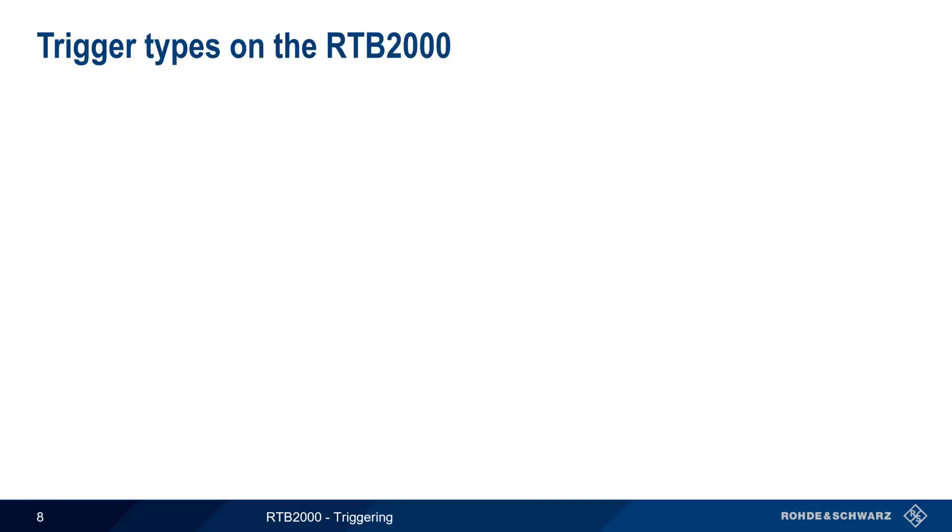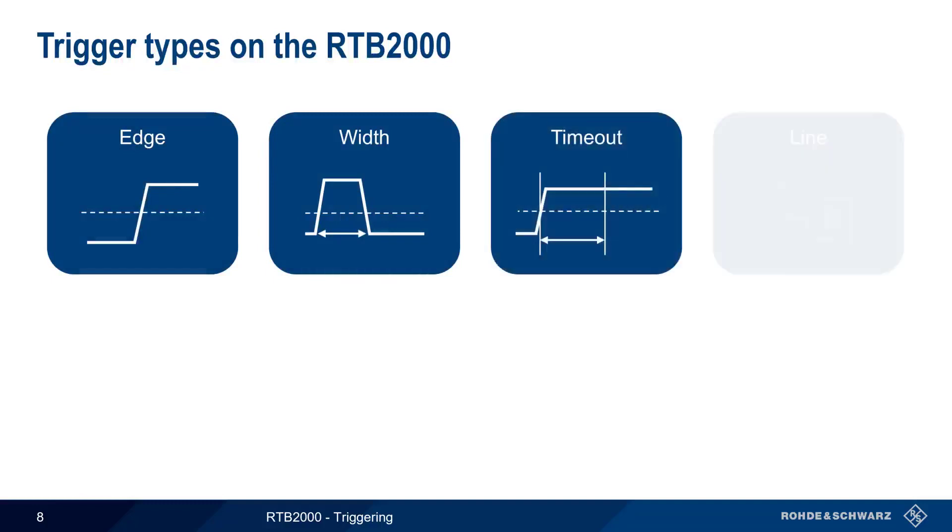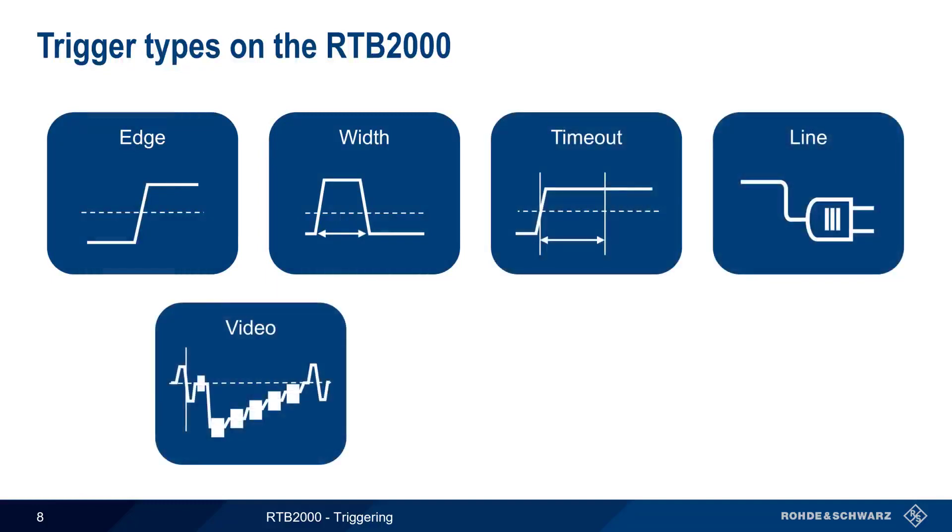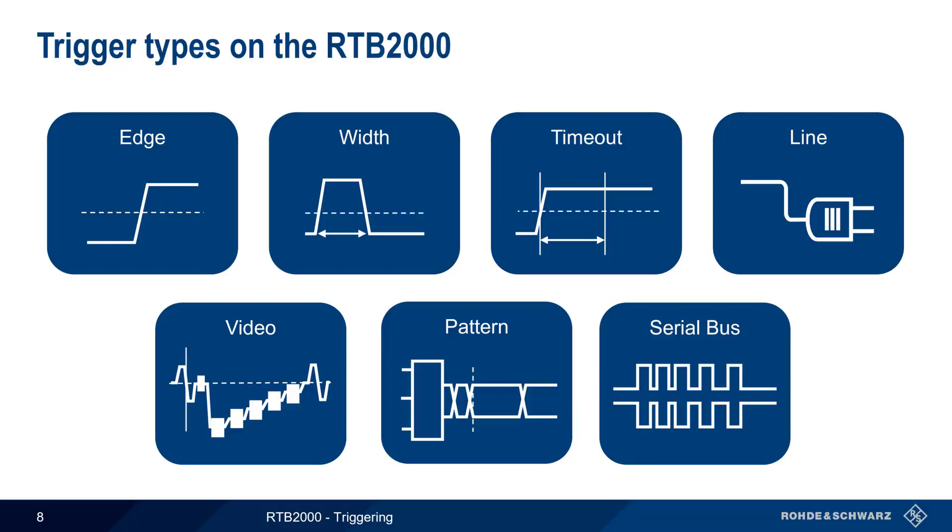The RTB2000 supports seven different types of triggers. The first five of these, Edge, Width, Timeout, Line, and Video, will be discussed in detail in this presentation. There are also two additional triggers that we won't be covering in this presentation: a pattern trigger, which is used with the mixed signal or logic analyzer feature of the RTB, and a serial bus trigger that can be used when performing serial decodes. Please see the separate presentations on each of these last two topics to learn more about triggering in these applications.